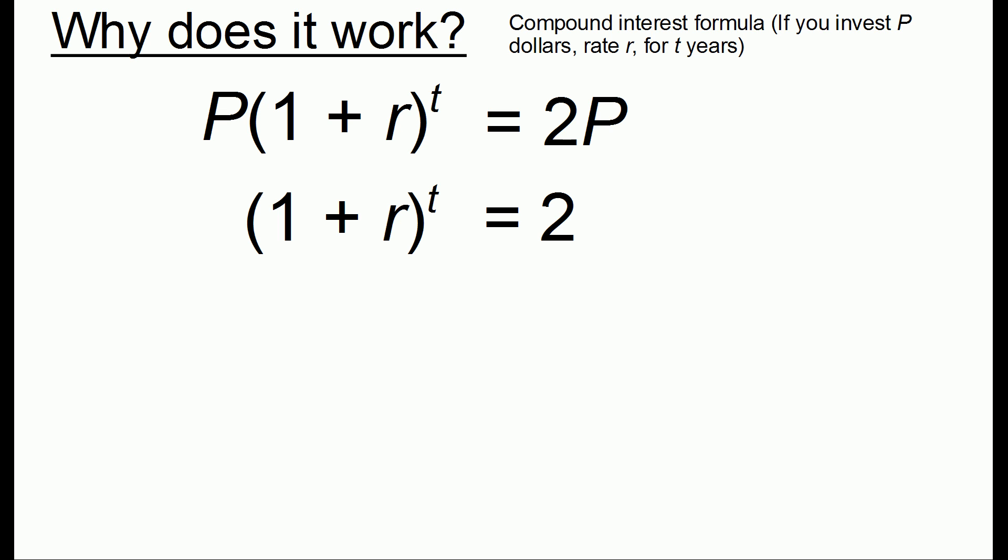The first thing we'll do is cancel out the P's. From here, we'll take the natural log of both sides, and we're almost done. We have a linear equation in T, and we're almost at the rule of 72.